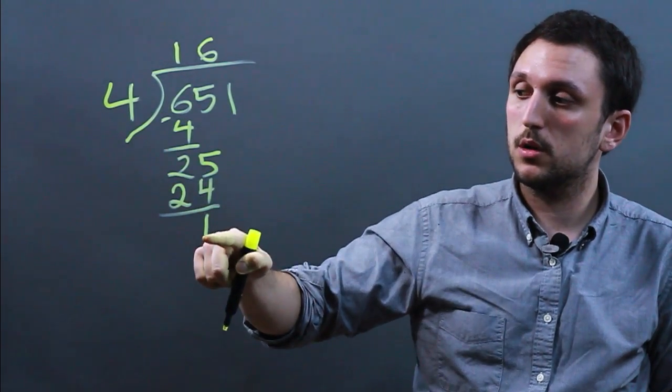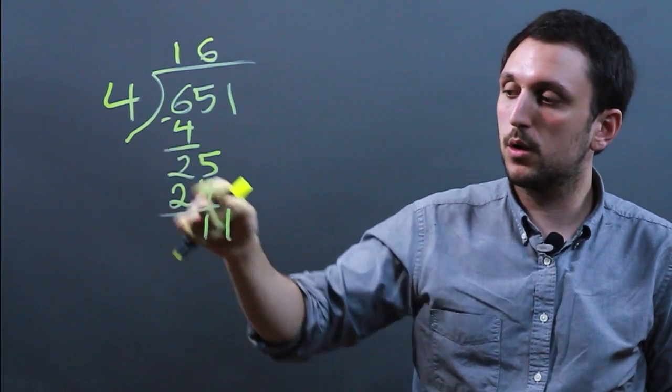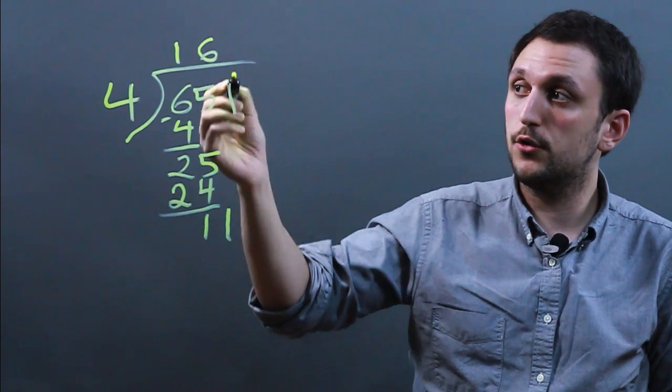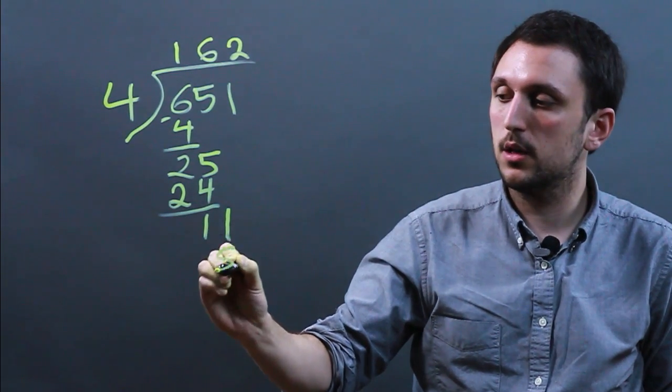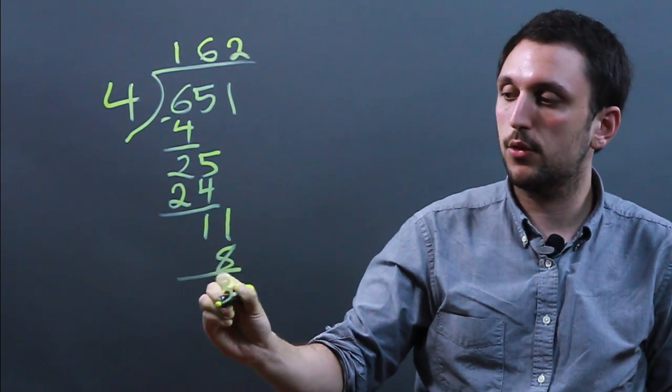Now 4 does not go into 1 so we bring the 1 down. 4 goes into 11 two times which is 8. 4 times 2 is 8 and so 11 minus 8 is 3.